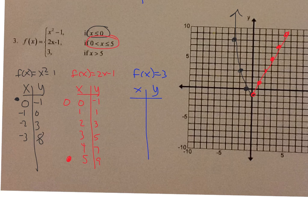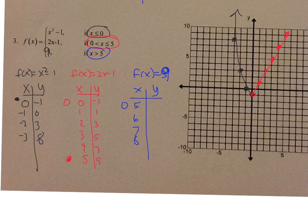I just realized there's a typo — this should actually be f(x) equals 9, not 3. So change that. For f(x) equals 9, in the x column we use values greater than 5: 5 is open circle, then 6, 7, 8. Plug it into your calculator — f(x) equals 9, so it's all 9s. So (5, 9) open circle, (6, 9), (7, 9), and so on. That's what your graph looks like.